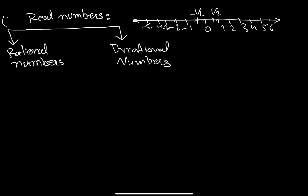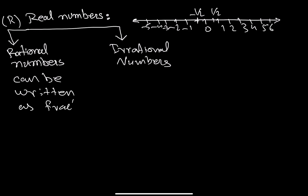Real numbers are symbolized as R. Rational numbers are all those numbers that can be expressed as a fraction — can be written as a fraction. For example, 5 can be written as 15 over 3, which gives us 5.